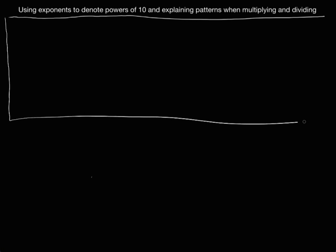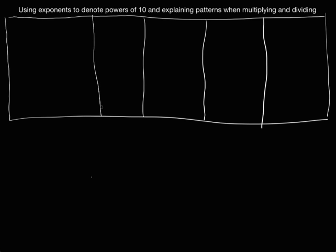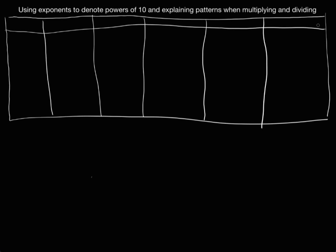I'm going to draw a place value chart divided into six columns. Along the top, I'll put in our place values. We'll start with the tens place, hundreds place, thousands place, ten thousands, one hundred thousands, and one million.